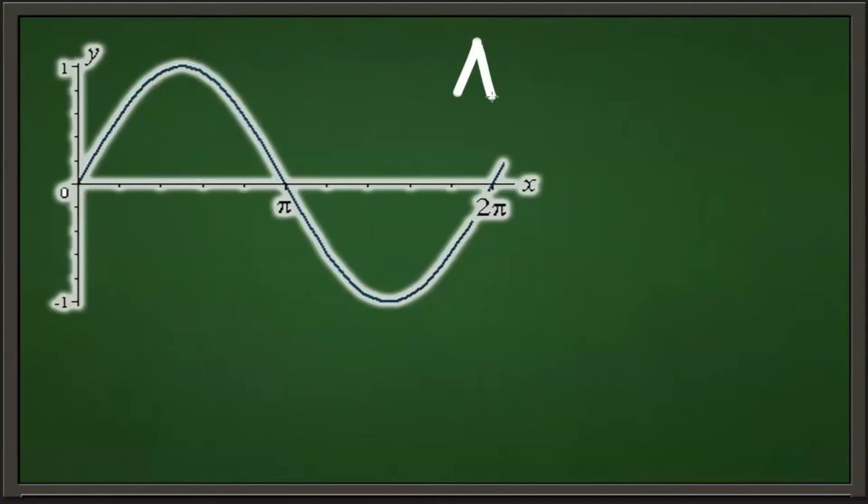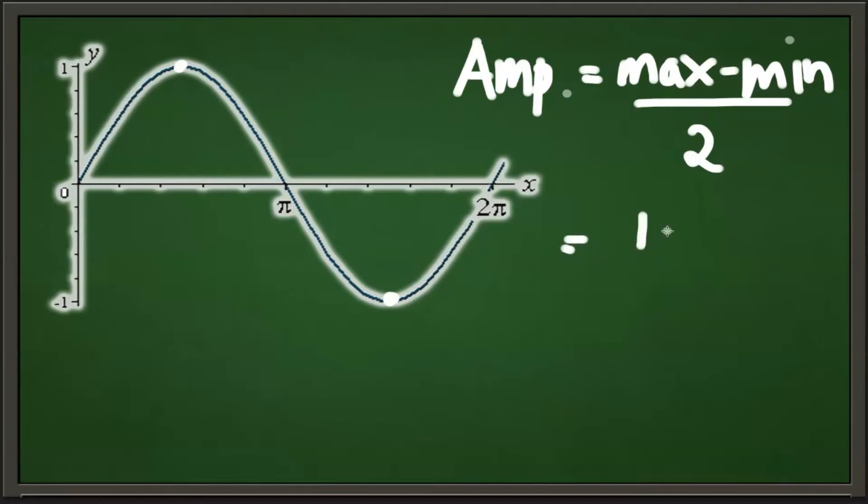So let's find our amplitude using our max and min. The equation for amplitude is (max - min)/2. So since the max is at 1 and the min is at -1, (1 - (-1))/2 equals 2/2 equals 1.